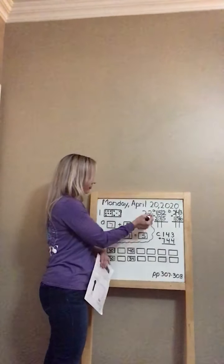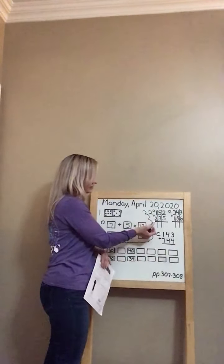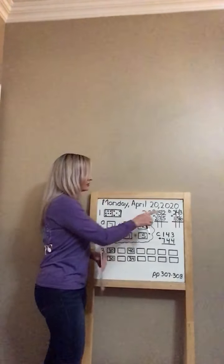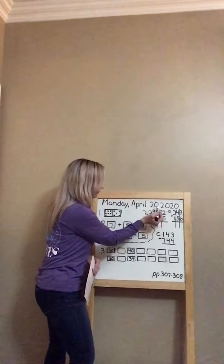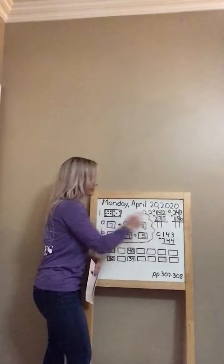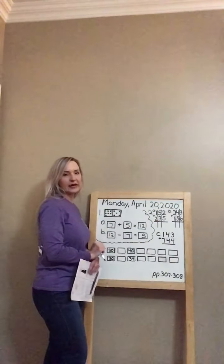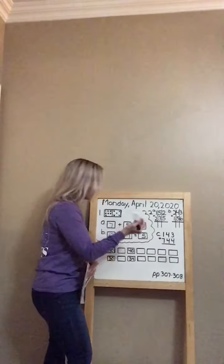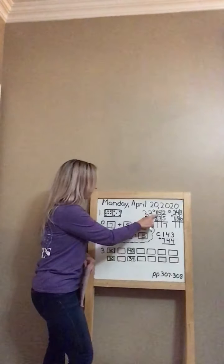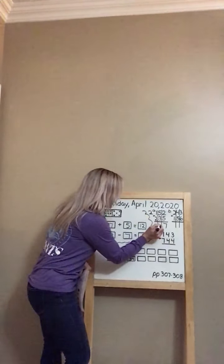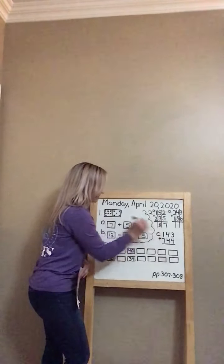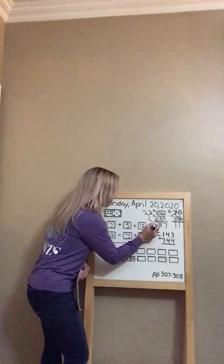Let's look at our first example, Example A: 152 plus 235. I've drawn lines, and you'll see on your worksheet that you have lines as well, to remind you that we have a ones column, a tens column, and a hundreds column. We need to keep our numbers in line. We always start with the ones place. Two plus five equals seven. Moving to the tens column: five plus three equals eight. Then the hundreds: one plus two equals three.